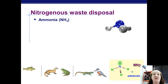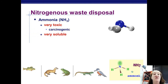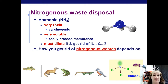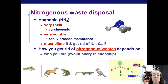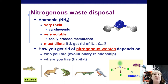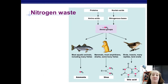Different types of organisms have different ways of dealing with nitrogenous waste. Ammonia (NH3) is extremely toxic and very soluble in water — it dissolves really easily, and it will easily cross membranes. You've got to get it diluted and get rid of it really fast. How you get rid of nitrogenous waste depends on who you are, where you live, and your evolutionary relationship to other creatures — whether you're aquatic, terrestrial, or an egg layer.